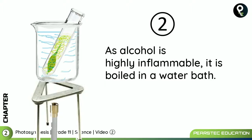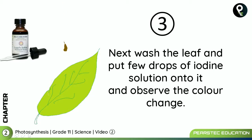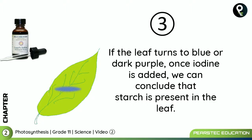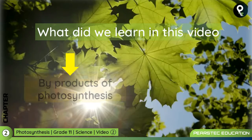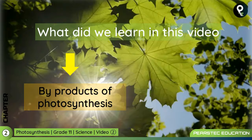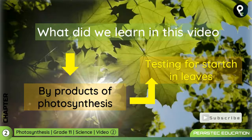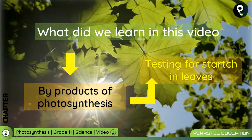As alcohol is highly inflammable, it is boiled in a water bath, not on the Bunsen burner. Step four: wash the leaf and put a few drops of iodine solution onto it; if it turns blue or dark purple, starch is present. In this video, we learned the byproducts of photosynthesis and how to test for starch in leaves. See you in the next session — take care!